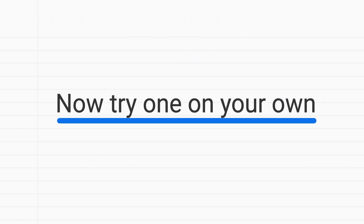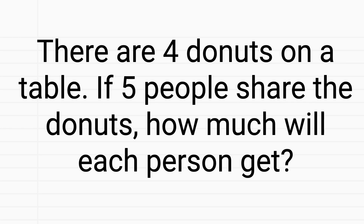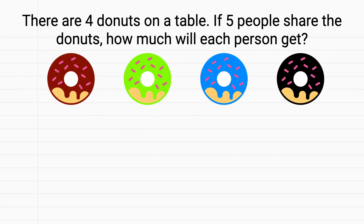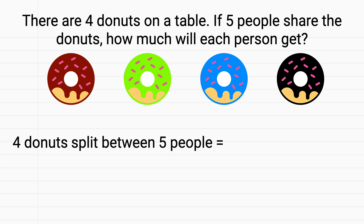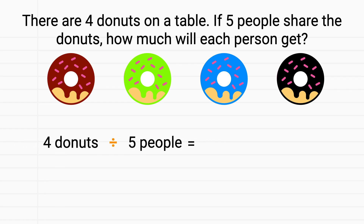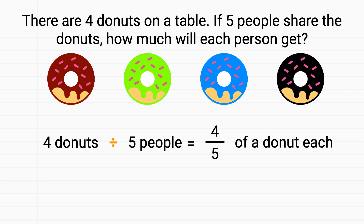Now it's time for you to try one of these on your own. There are four doughnuts on a table. If five people share the doughnuts, how much will each person get? If we imagine our four doughnuts, we have four doughnuts being split between five people. Remember that splitting something up can be represented with division, so four doughnuts divided by five people gives us four-fifths of a doughnut each.